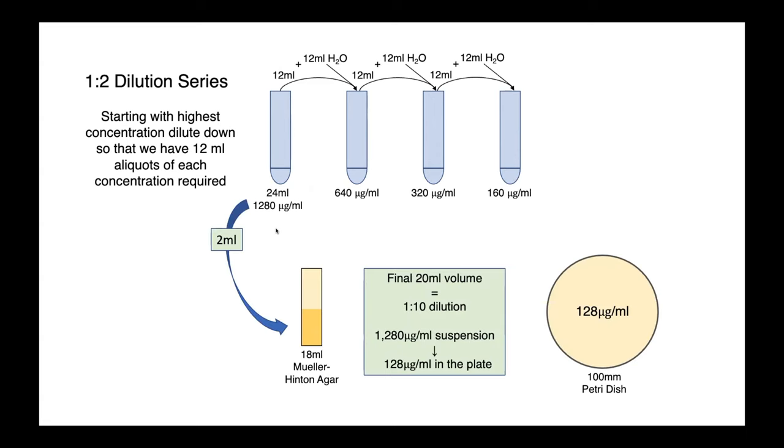The next step is to incorporate these antimicrobial suspensions into agar to give us our final media that we'll use in our susceptibility test. We take 2 milliliters of each suspension and combine that with 18 milliliters of molten Mueller-Hinton agar. So we have a final volume of 20 milliliters, which gives us another 1 in 10 dilution.